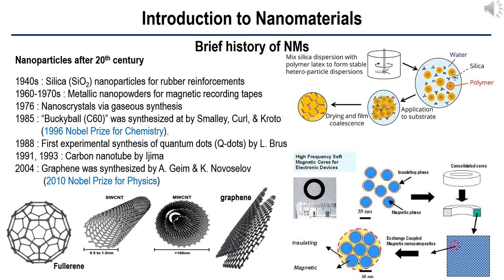Nanostructured catalysts have also been investigated for over 70 years. By the early 1940s, precipitated and fumed silicon nanoparticles were being manufactured and sold in the USA and Germany as substitutes for ultrafine carbon black for rubber reinforcements. Silicon nanoparticles can intervene in the clustering of polymeric particles with the aid of water molecules, and after drying, the mixture forms strong and flexible materials. Nanosized amorphous silica particles have found large-scale applications in many everyday consumer products, ranging from non-dairy coffee creamer to automobile tires, optical fibers, and catalyst supports.